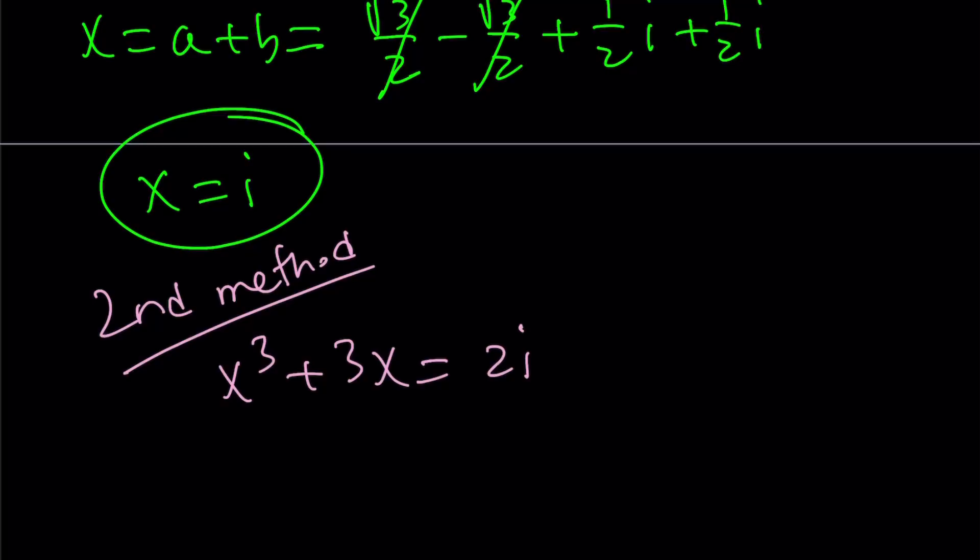So I'm going to guess. Since the right-hand side is so simple and I have powers of x on the left-hand side, I'm just thinking, can x be a power of i? It's probably either i or i cubed. Well, let's test i. If x is equal to i, then i cubed plus 3i becomes, because i cubed is negative i plus 3i, and that's equal to 2i. Awesome! So x equals i works.